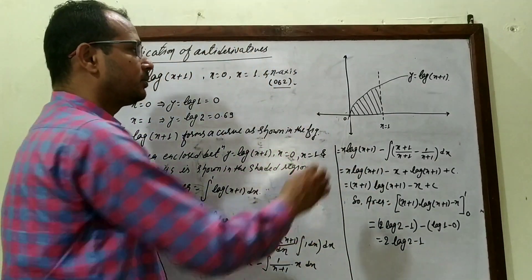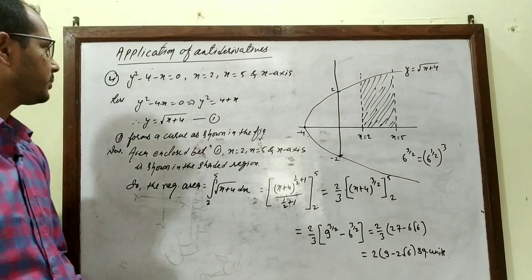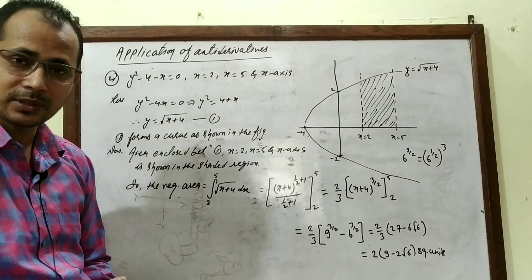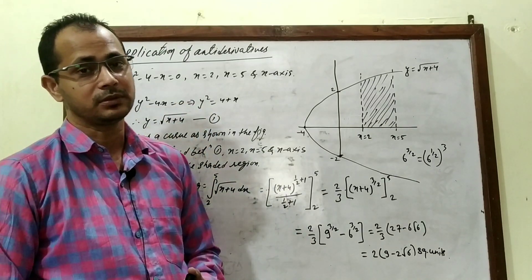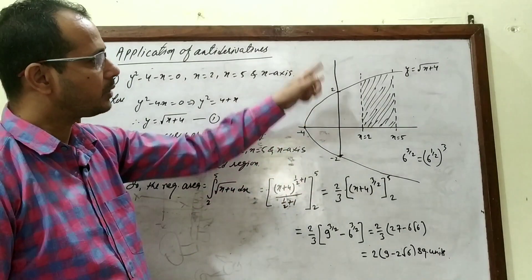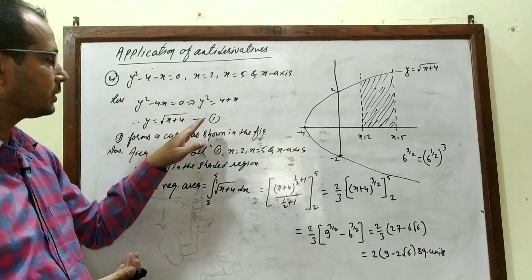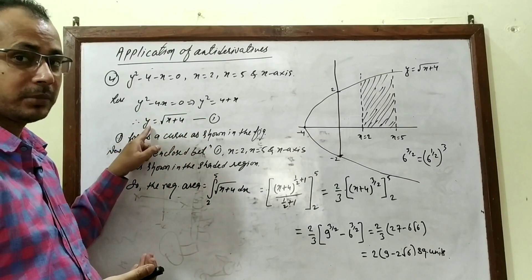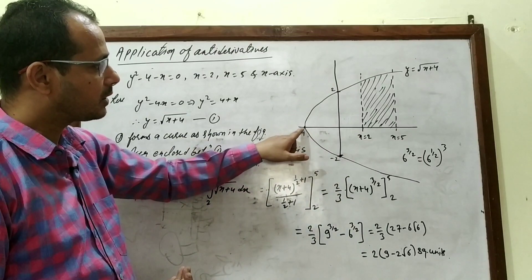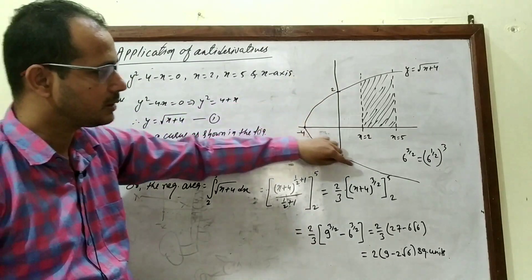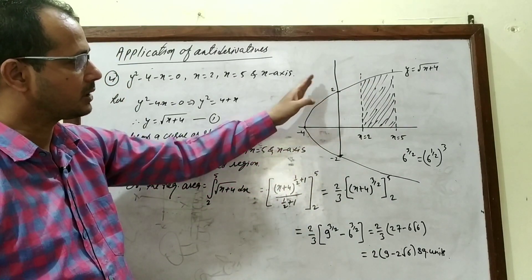Now one more question: y² − 4 − x = 0. We rearrange to y = √(x + 4). Setting x = 0: y = √4 = ±2, so it intersects the y-axis at (0, 2) and (0, −2). Setting y = 0: x + 4 = 0, so x = −4. This is a parabola opening to the right with vertex at (−4, 0).